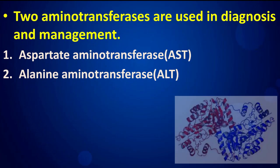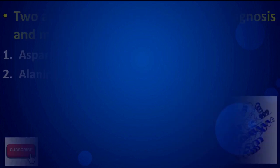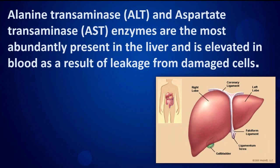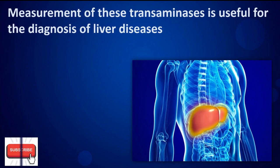Two aminotransferases are used in diagnosis and management: aspartate aminotransferase (AST) and alanine aminotransferase (ALT). These transaminase enzymes are the most abundantly present in the liver and are elevated in blood as a result of leakage from damaged cells. Measurement of these transaminases is useful for the diagnosis of liver diseases.